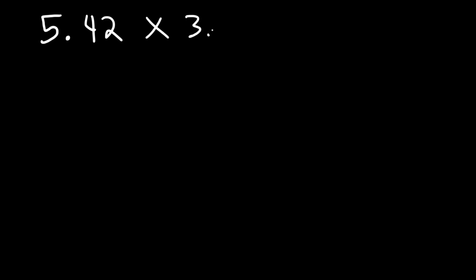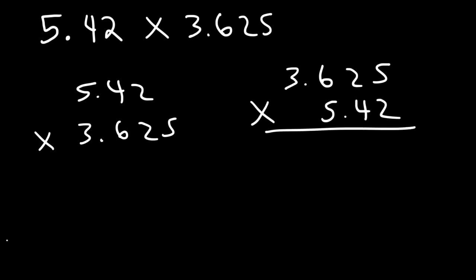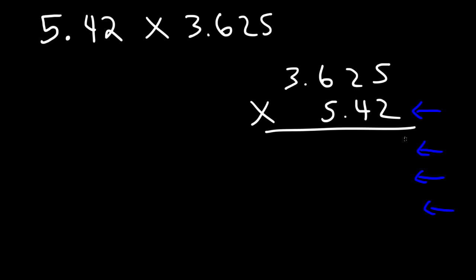Now let's try the last example in this video: 5.42 times 3.625. Here's a question — which number should we put on top? Personally, I prefer to put the number with more digits on top, because the number on the bottom tells you how many rows you'll have. So I'd rather have 3 rows instead of 4 rows. Regardless of which way you go, you can still get the right answer — it's really a matter of choice.